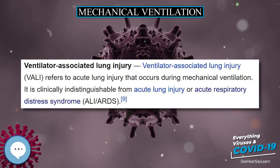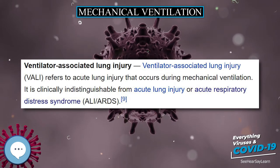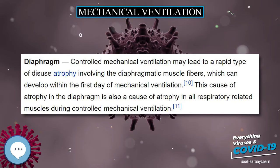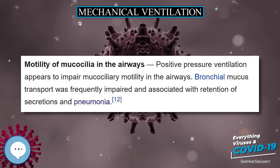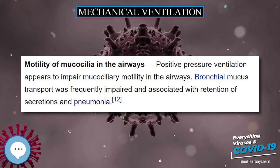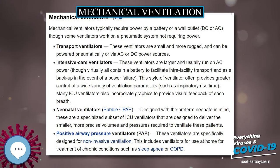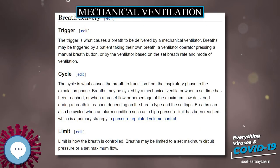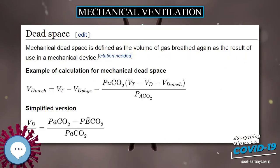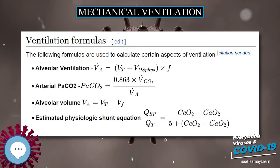Mechanical ventilation is indicated when the patient's spontaneous breathing is inadequate to maintain life. It is also indicated as prophylaxis for imminent collapse of other physiologic functions, or ineffective gas exchange in the lungs. Because mechanical ventilation serves only to provide assistance for breathing and does not cure a disease, the patient's underlying condition should be identified and treated. Other factors must be taken into consideration because mechanical ventilation is not without its complications. In general, mechanical ventilation is instituted to correct blood gases and reduce the work of breathing.